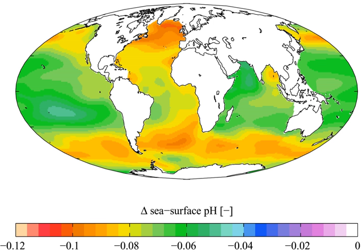The carbon cycle describes the fluxes of carbon dioxide between the oceans, terrestrial biosphere, lithosphere, and the atmosphere. Human activities such as the combustion of fossil fuels and land use changes have led to a new flux of CO2 into the atmosphere. About 45% has remained in the atmosphere, most of the rest has been taken up by the oceans, with some taken up by terrestrial plants.